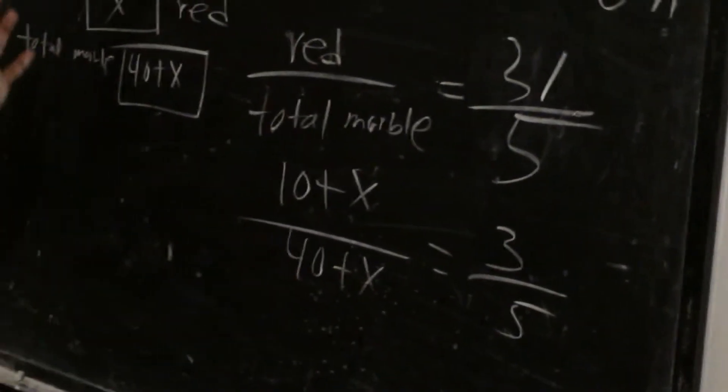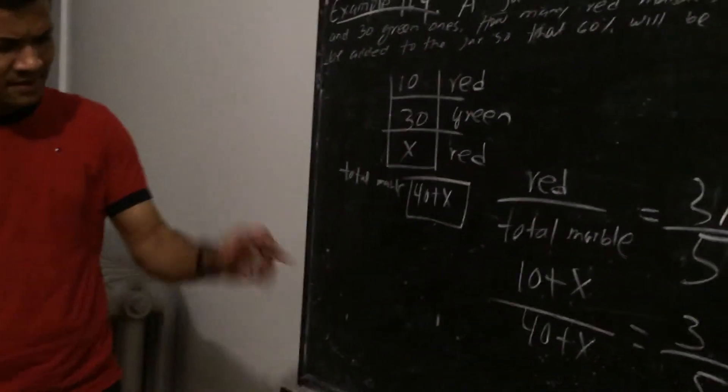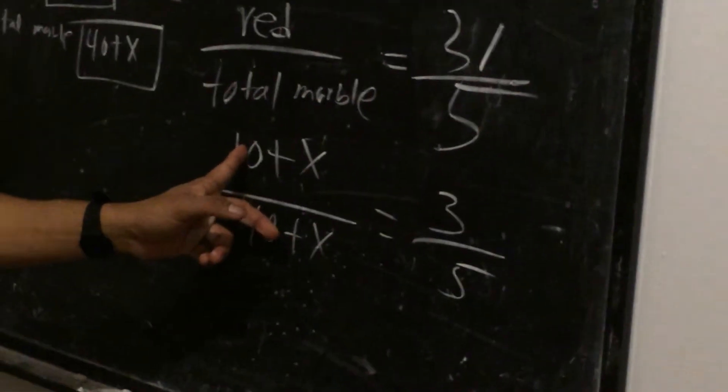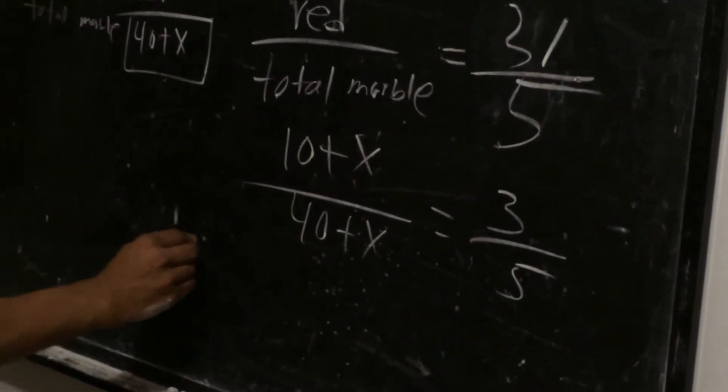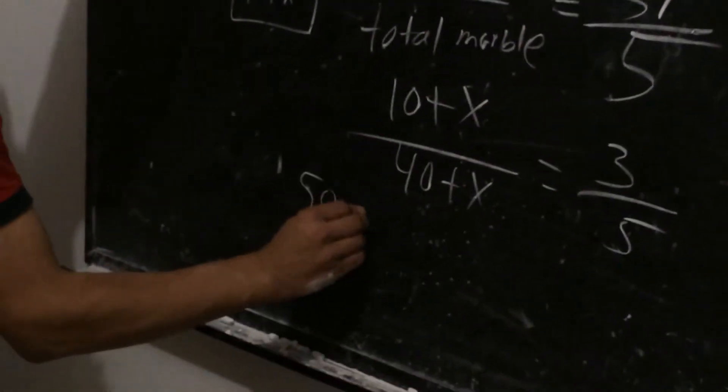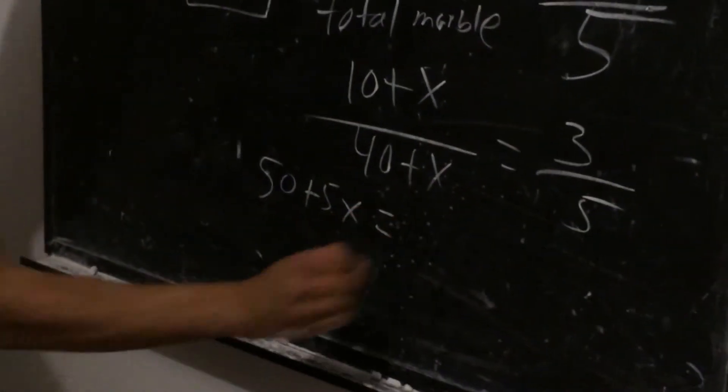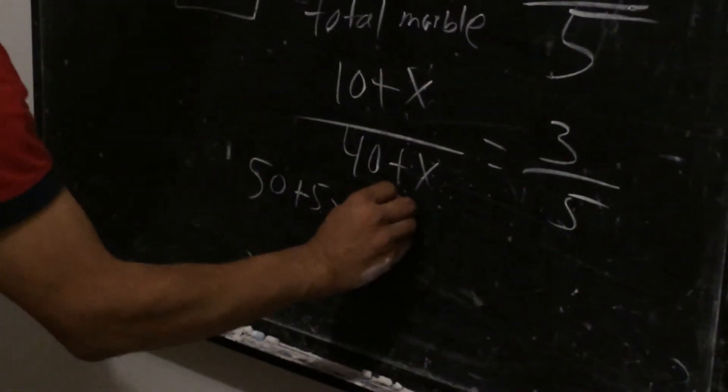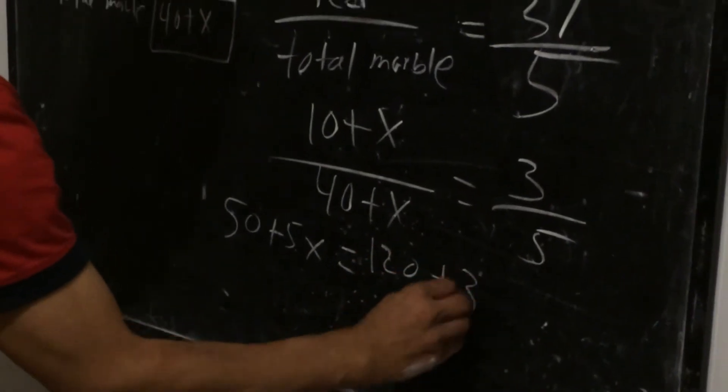So now it's just cross multiplication. Anybody can do that, but let's get it done. 50 plus 5x, 50 plus 5x, equal to 120 plus 3x.